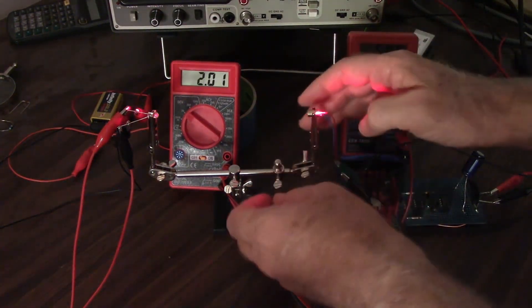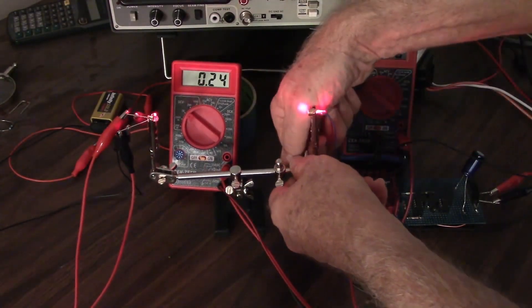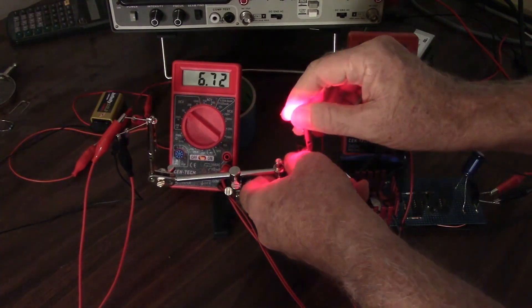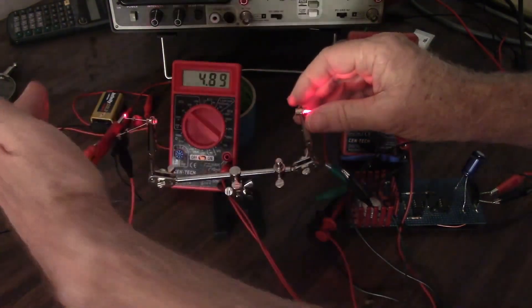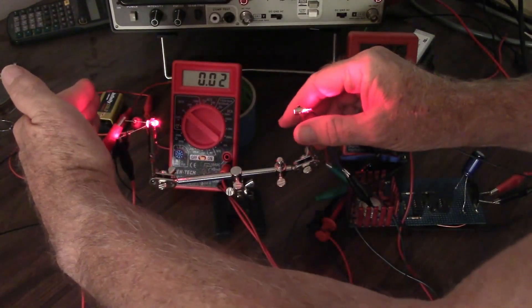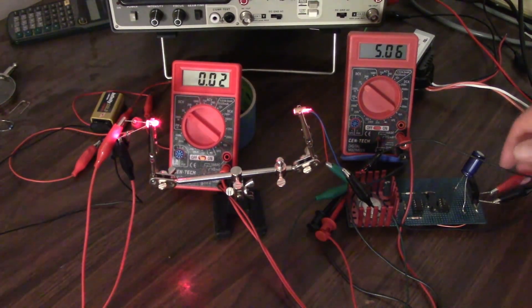Now we just need to aim that at the photodiode. That's going to be a little tricky, but let's see if we can get that to go. I have to loosen this just a tad. A little too much there. Okay. Let's put something behind here to help me aim this silly thing. Oh, there we go. Oh, it's right on. Right on. And look what happened to the voltage. Way down to 0.2 volts, 0.02 volts.